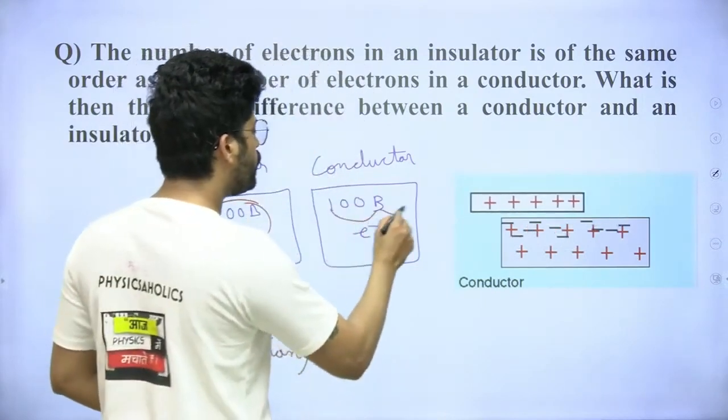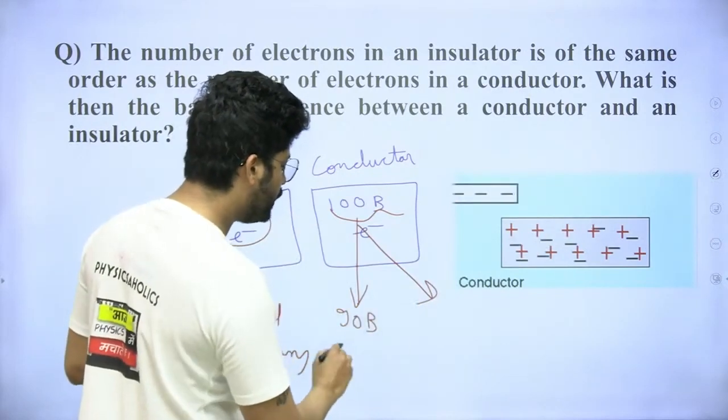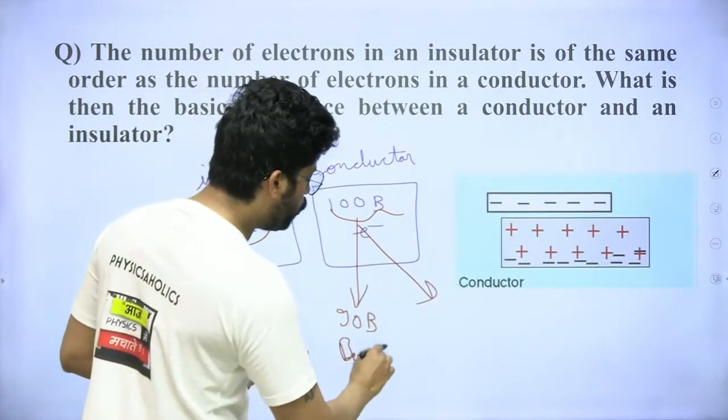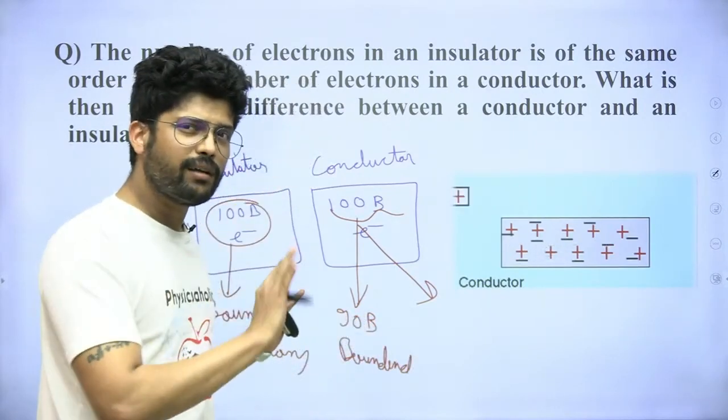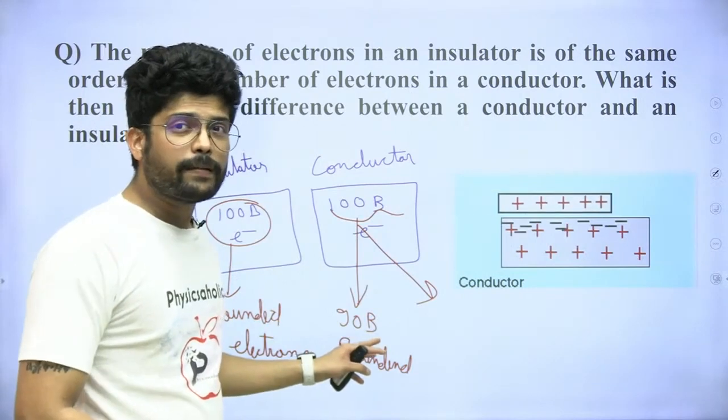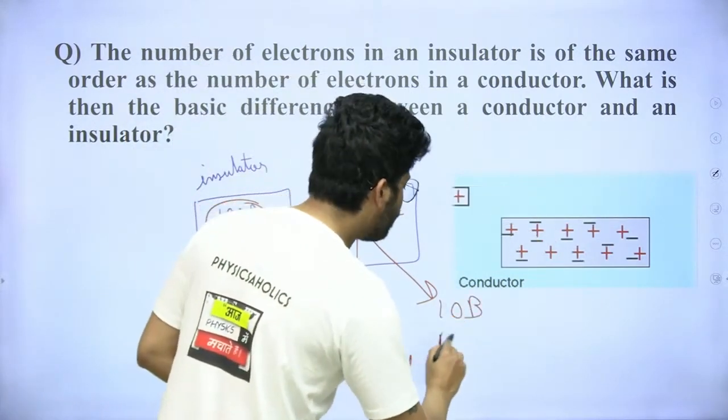Conductor, just to take an idea: 90 billion, 100 billion to 90 billion bounded. That means they're not able to move. This is bounded. The other 10 billion are free electrons.